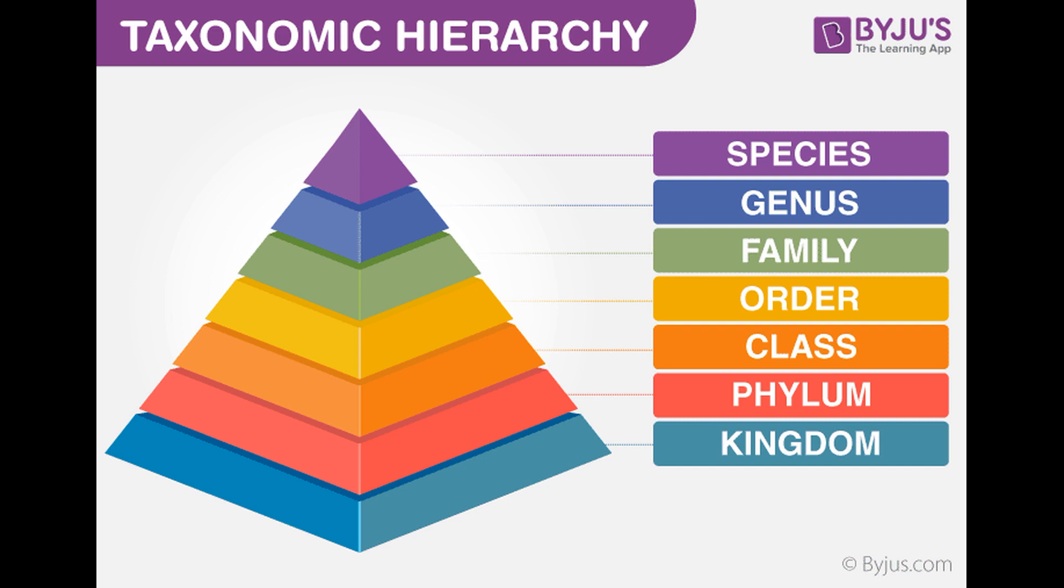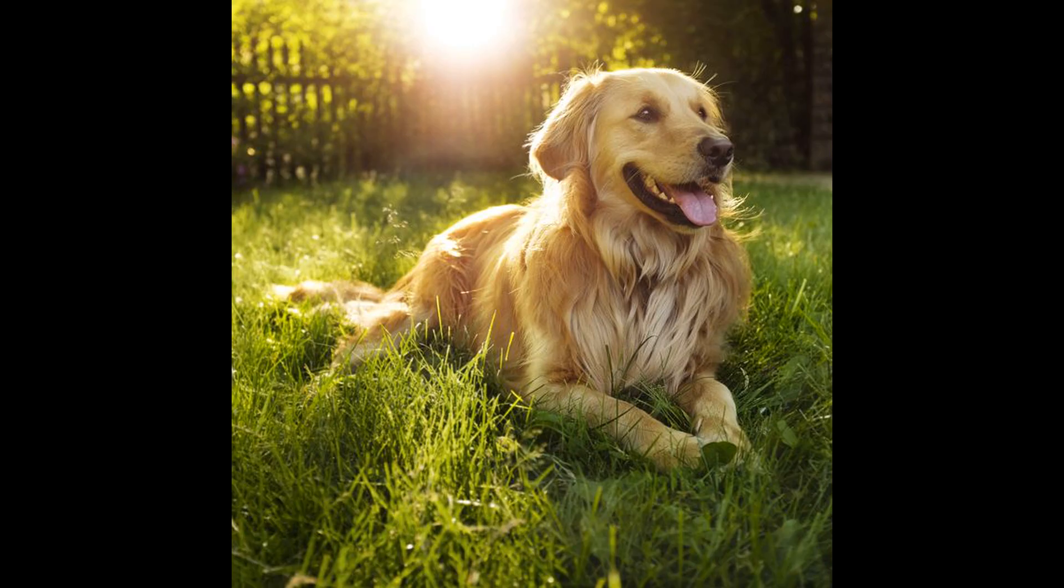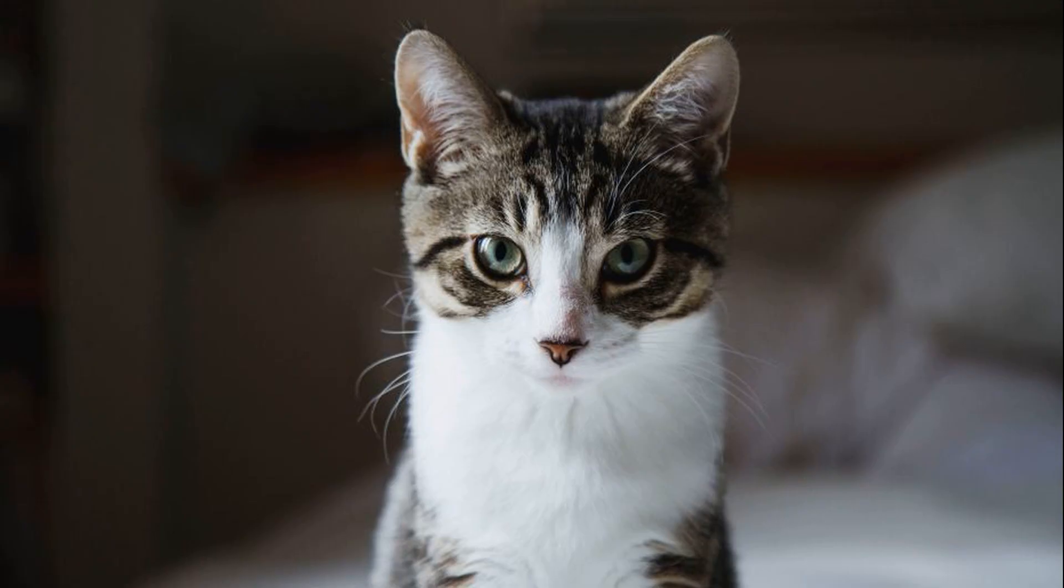The genus species name we identify organisms by is known as their binomial nomenclature. For example, humans are Homo sapiens, dogs are Canis lupus, and cats are Felis domesticus.